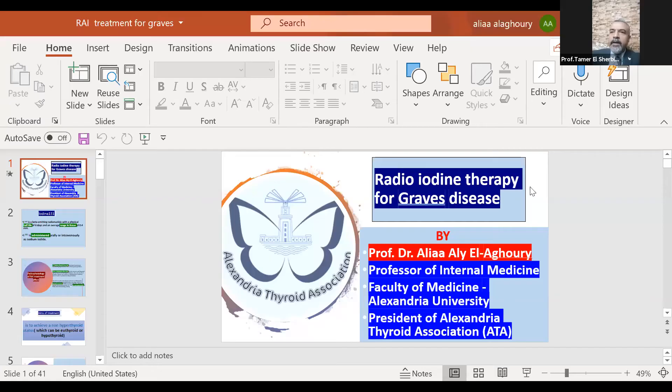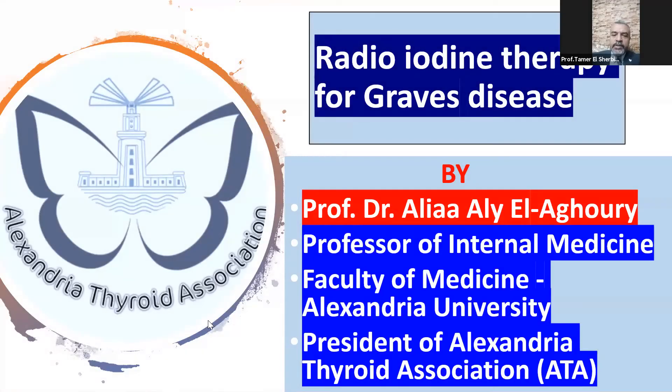We are going back to Graves' disease. We are going to tackle the three lines of treatment of Graves' disease, and we are going to start with the radioiodine ablation. Radioiodine ablation is the most commonly used line of treatment in North America and the United States specifically, which may not be the case in Egypt or Europe. We are going to hear from Dr. Alia Ilaghori, the president of Alexandria's Thyroid Association, who will discuss radioiodine ablation as a treatment for Graves' disease.